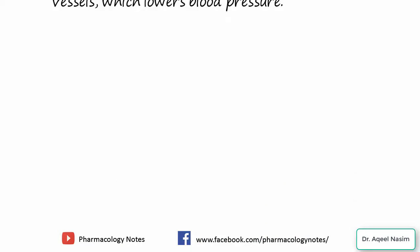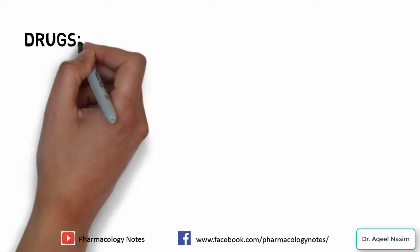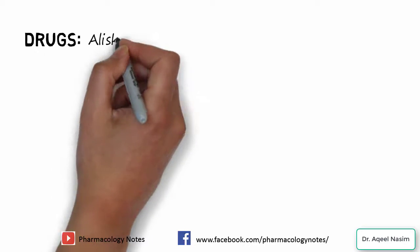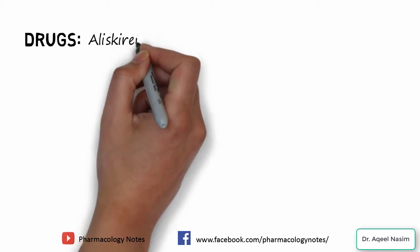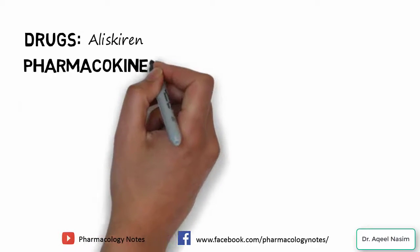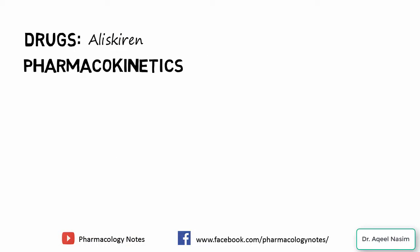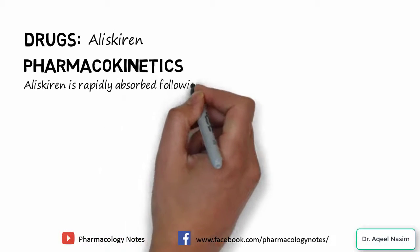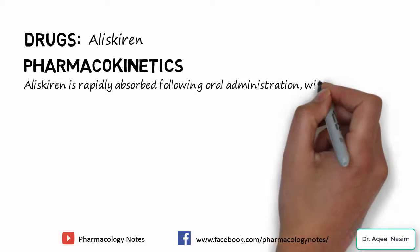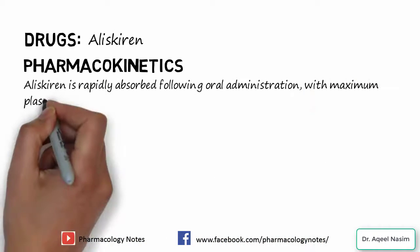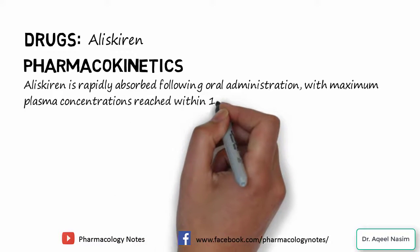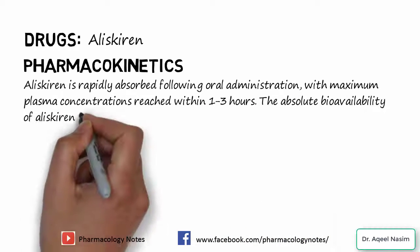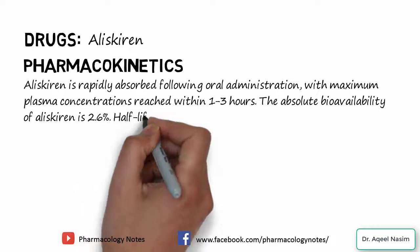The drug included in this class is known as aliskiren. Regarding basic pharmacokinetics, it is absorbed after oral administration with maximum plasma concentration reached within 1 to 3 hours. The absolute bioavailability of aliskiren is 2.5%, and the half-life is approximately 40 hours.